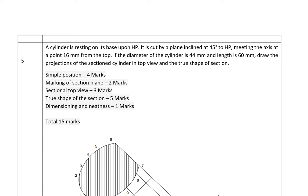Hello everybody. In this video we will try to solve a question based on section of solids. The question is: a cylinder is resting on its base upon HP. It is cut by a plane inclined at 45 degrees to HP, meeting the axis at a distance of 16mm from the top. If the diameter of the cylinder is 44mm and the length is 60mm, draw the projections of the sectioned cylinder in top view and true shape of section.